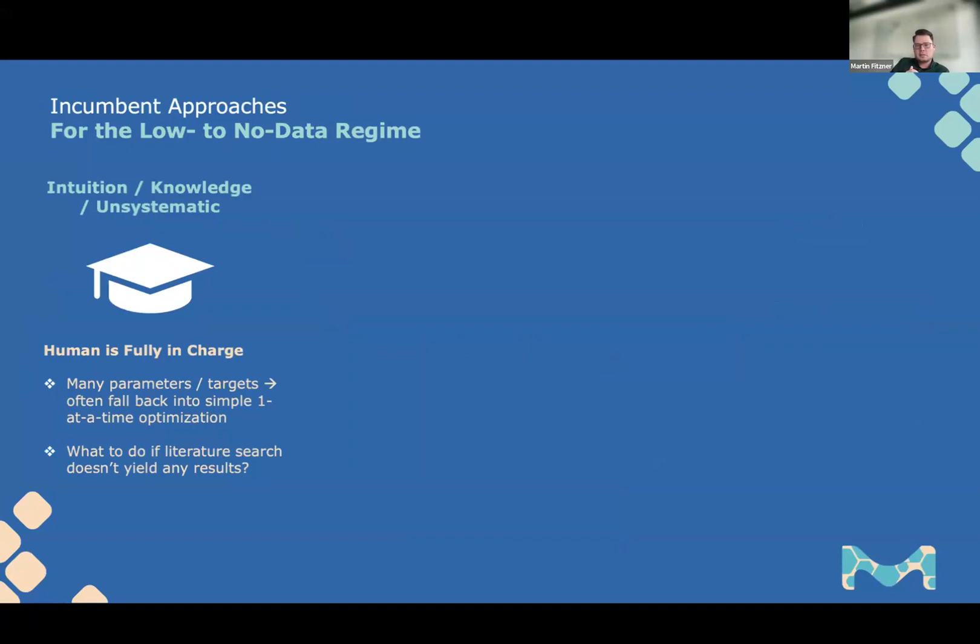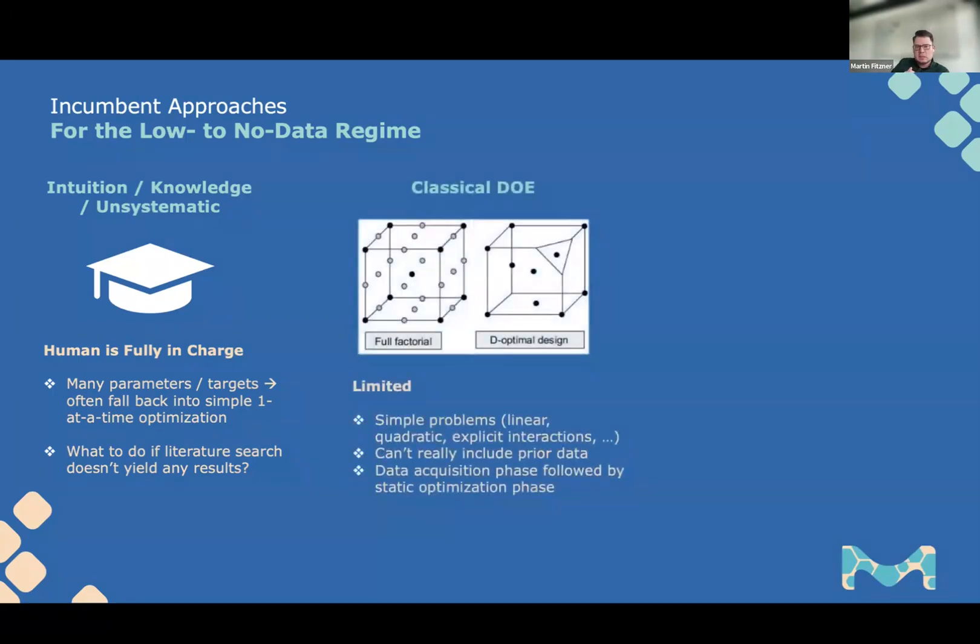What are the incumbent approaches for the low to no data regime? There's the default way, which is human intuition or human knowledge, which has obvious downsides. What do you do if you have so many parameters or multiple targets? No human is really good at optimizing that. And you fall back into simple methods where you change one thing at a time. Humans also do similarity or literature searches, for instance, in healthcare problems. What happens if you don't succeed? If there's nothing, what if your experiments just don't work? It often ends up in unsystematic work.